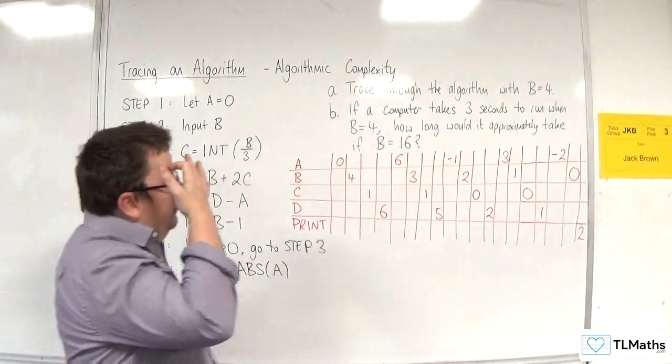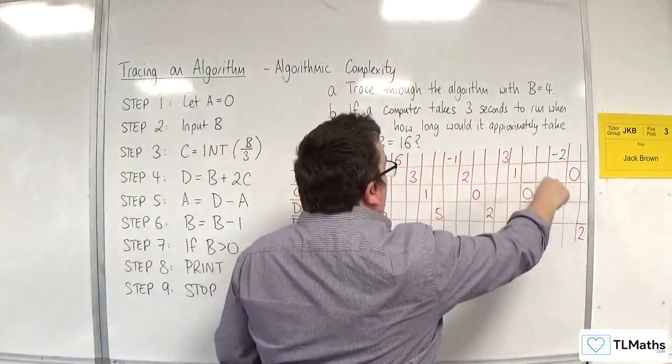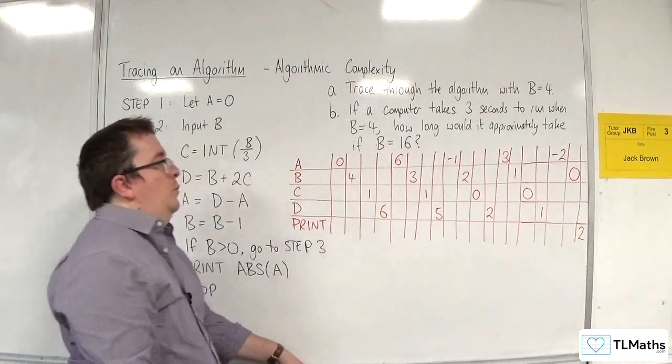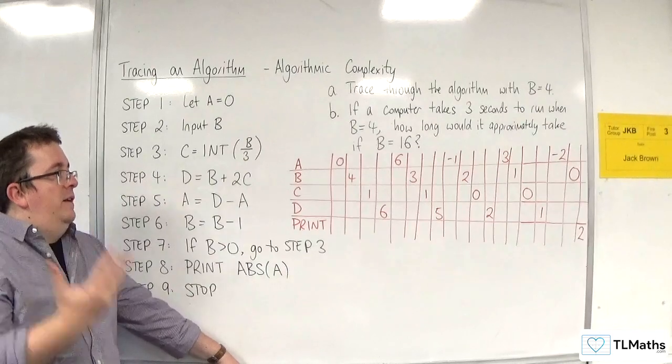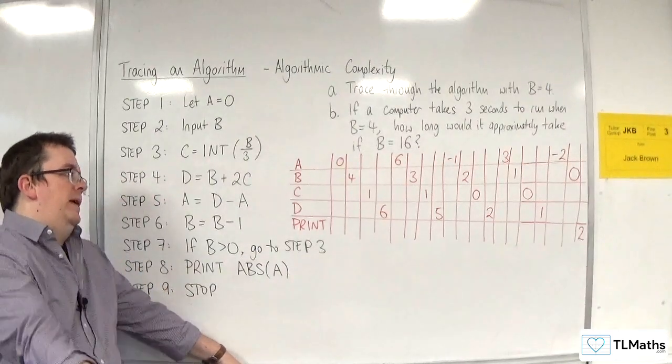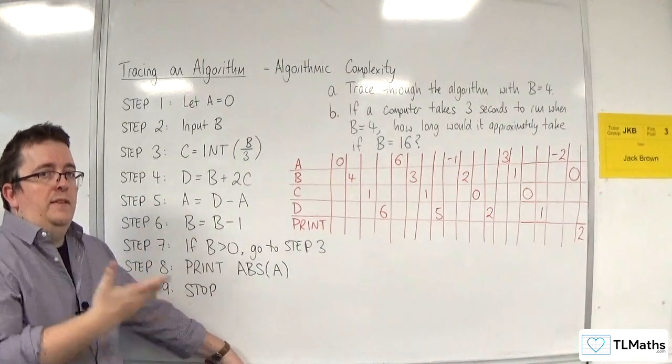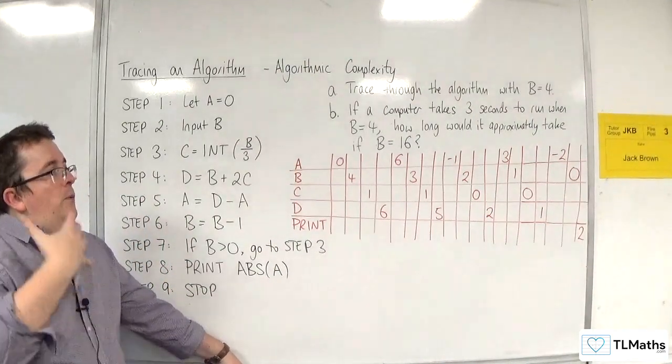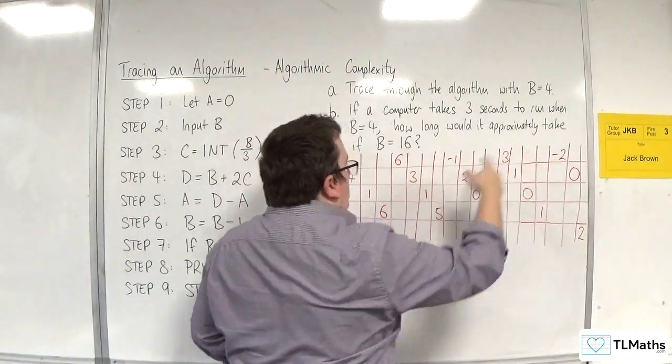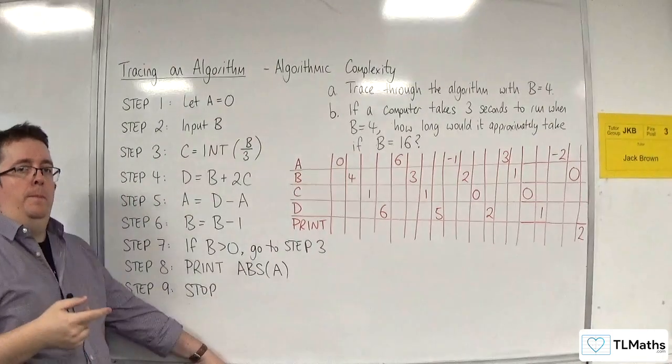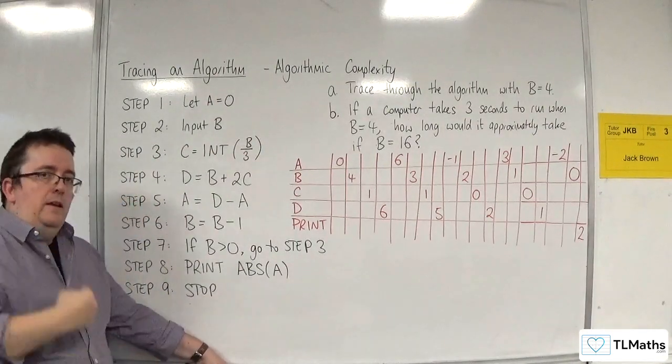Now, each time we went through the algorithm, you can kind of see it in loops here, we went through the same four stages. We found a value for a, found a value for b, found a value for c, found a value for d. Then a, then b, then c, then d. So, essentially, b was counting down, and was a counter for us. Each time we went through b, it reduced by 1. So, it was a counter.